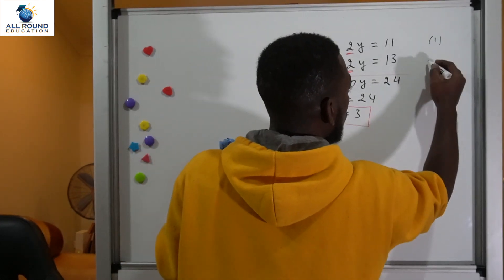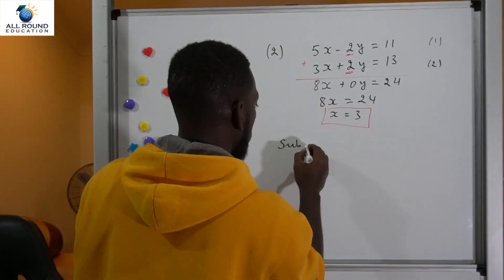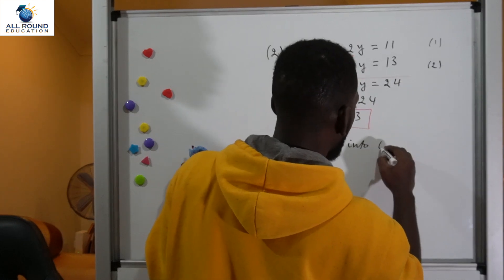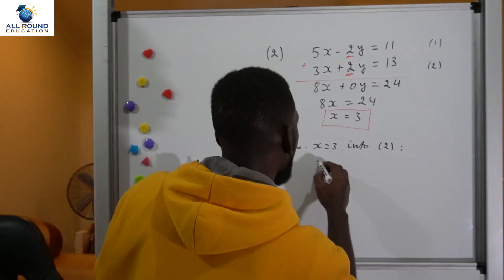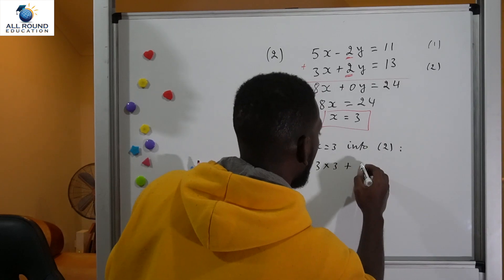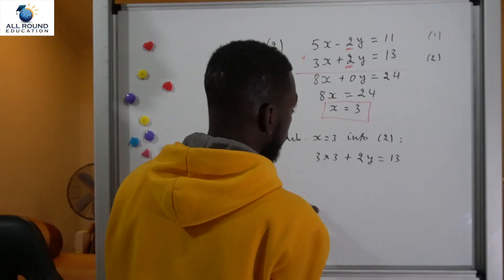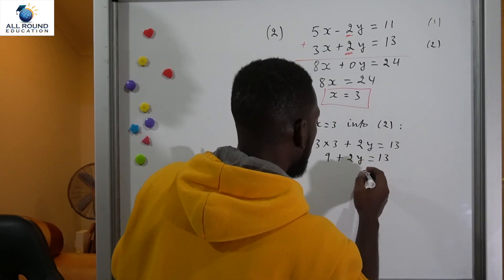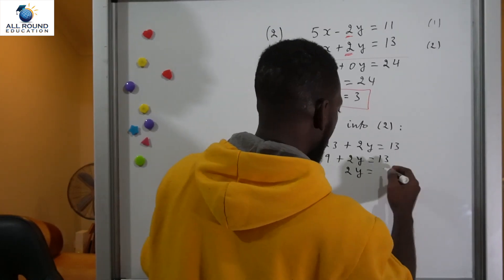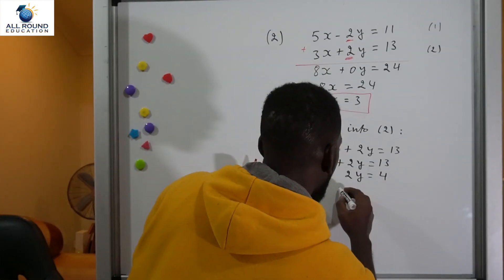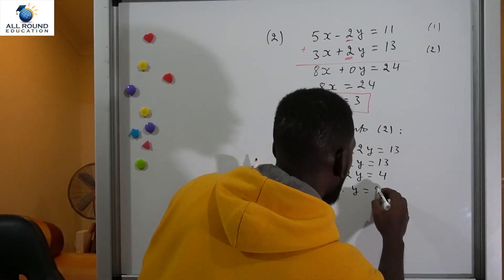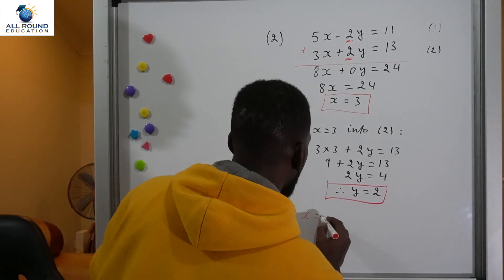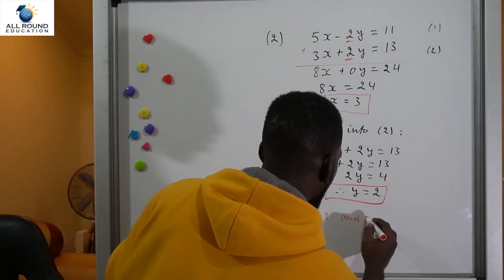Now let's substitute x equals 3 into equation two. That gives us 3 times 3 plus 2y equals 13, so 9 plus 2y equals 13. Subtracting 9 from both sides gives 2y equals 4, and dividing by 2 on both sides gives y equals 2. We can conclude: x equals 3 and y equals 2.